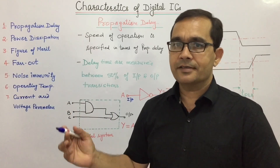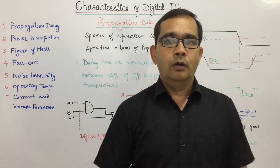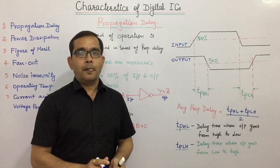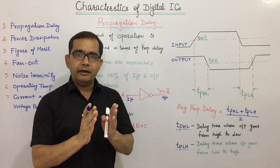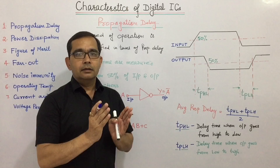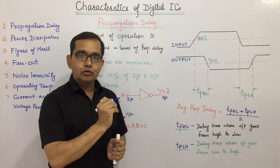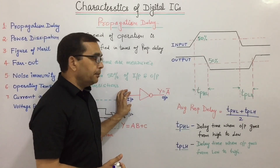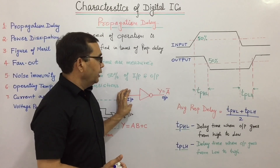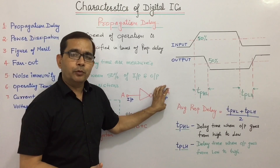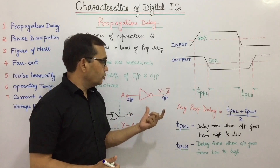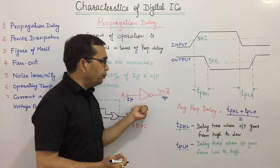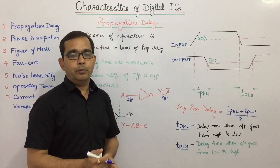Let us take the first parameter: propagation delay. The propagation delay of a gate is the average transition time that a signal takes to propagate from input to the output. When we apply a signal at the input of a gate, it will take a certain time to propagate to the output. This particular interval of time is called propagation delay.